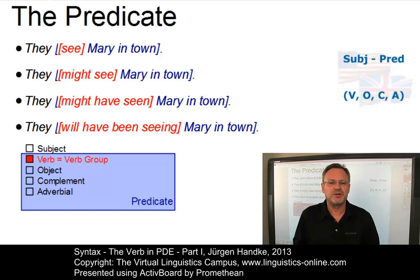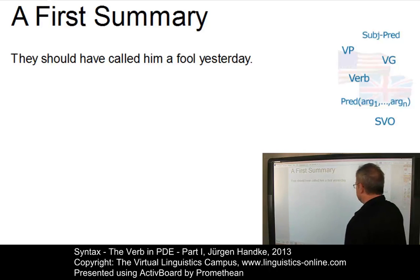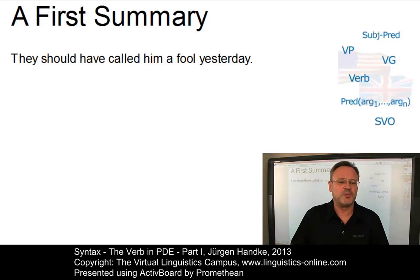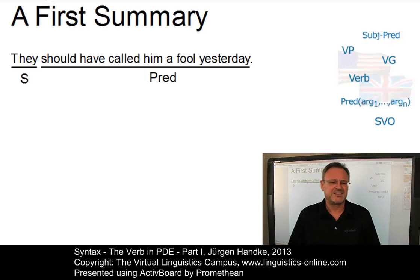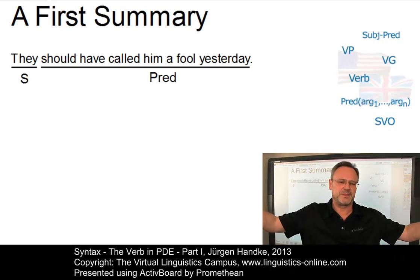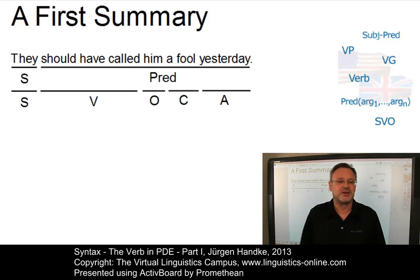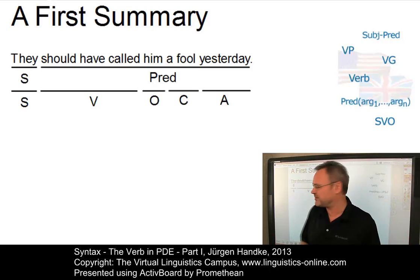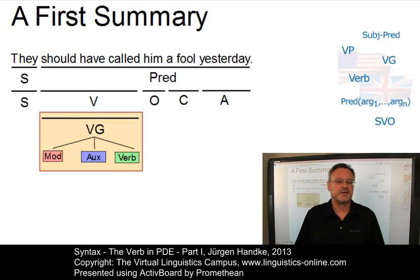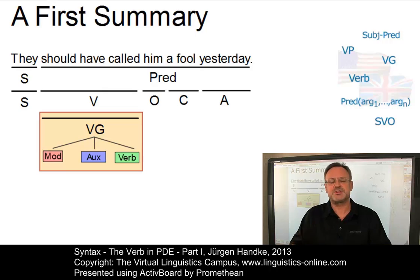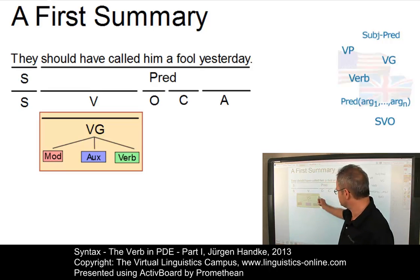Let us summarize our terminological discussion. In this eLecture we are concerned with the formal realization of the syntactic function verb. The term predicate cannot be used in this context because it is too general. The term verb itself is used in several ways, one of them being the syntactic function itself. Since this may include more than one verbal category, we will use the term verb group to capture all verbal elements that can realize the syntactic function verb. Since the term verb phrase is used ambiguously within linguistics, the term verb group will be used henceforth in such a traditional analysis.